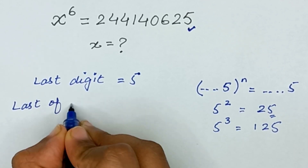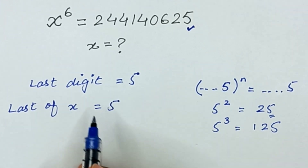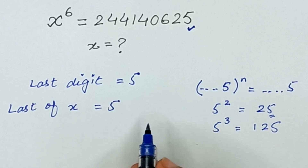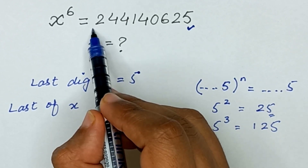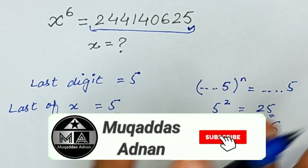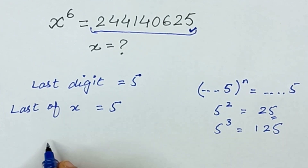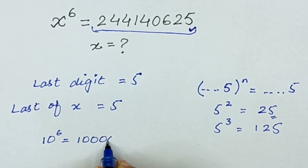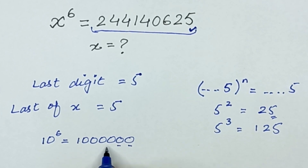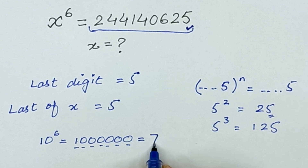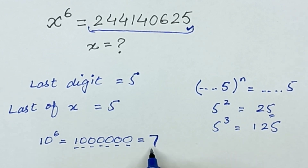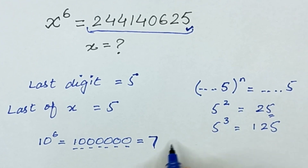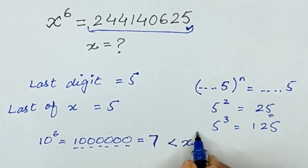Now x cannot be a three-digit number; it can only be a two-digit number, since we have a nine-digit number here. For comparison, 10 raised to the power 6 gives a number with seven digits, but x raised to the power 6 has nine digits, so 10^6 is less than x^6.